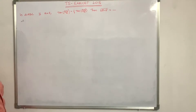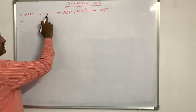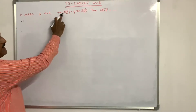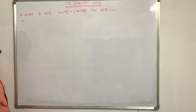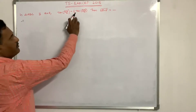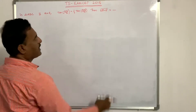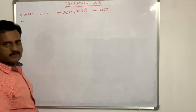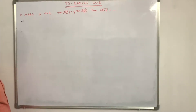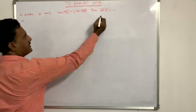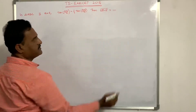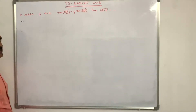In triangle ABC, if A = 5 and tan((A−B)/2) = (1/4)·tan((A+B)/2), then find the value of √(A²−B²).